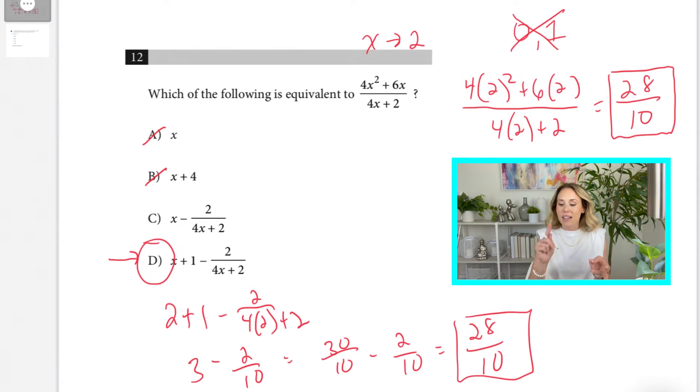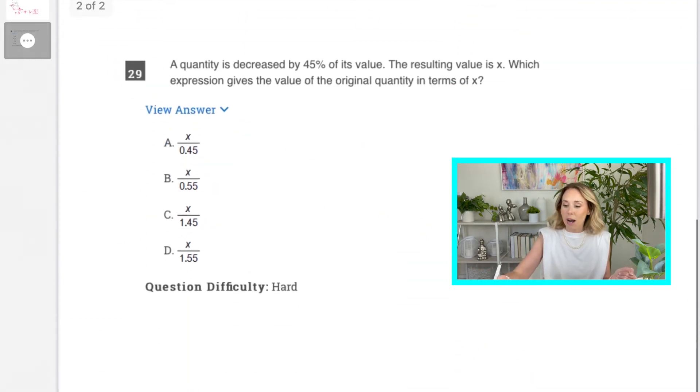Quicker, more efficient, tangible. I understand what 28 tenths is. I really can't visualize what 4x squared plus 6x over 4x plus 2 means. So, it's just a quicker, easier way to get the answer. Now, let's look at one more problem.